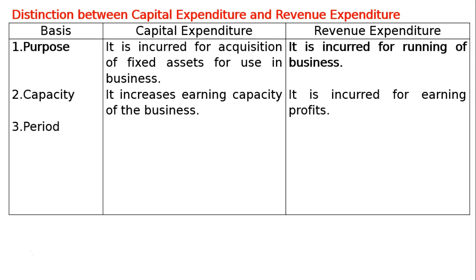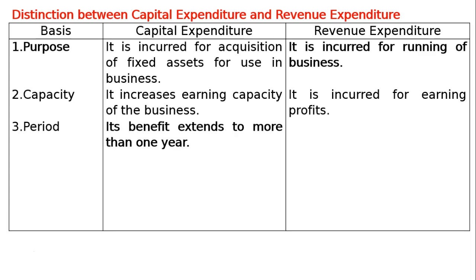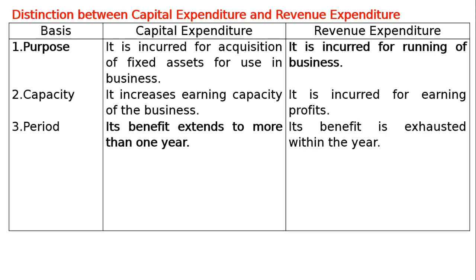The third basis is period. For capital expenditure, its benefit extends to more than one year — years together, the capital expenditure gives benefit to the business. Whereas, in case of revenue expenditure, its benefit is exhausted within the year.